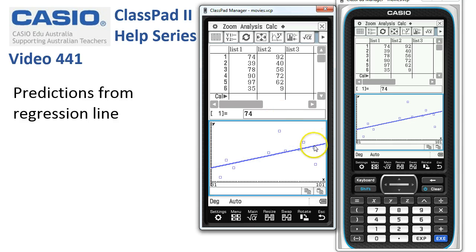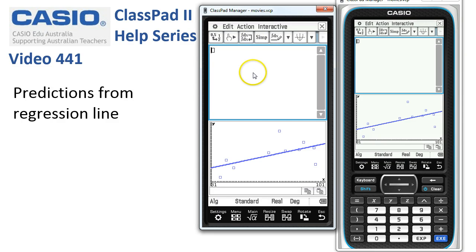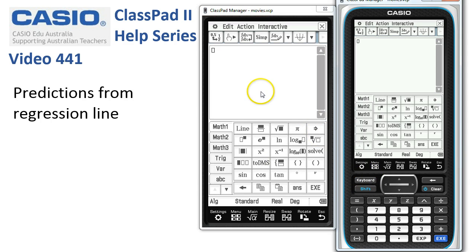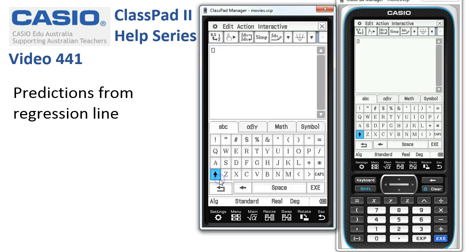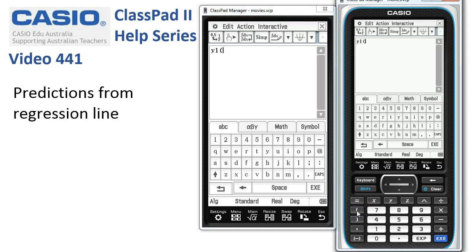But now what I'm going to do to make a prediction for 90 is tap onto the square root of alpha up here, which will open up a copy of main in the top window. Using the keyboard over here, I'm going to go down to the ABC tab, get lowercase, and type in Y1, open a bracket.